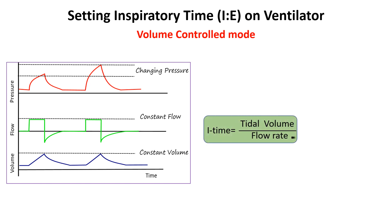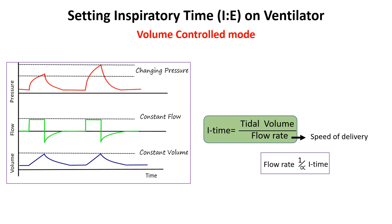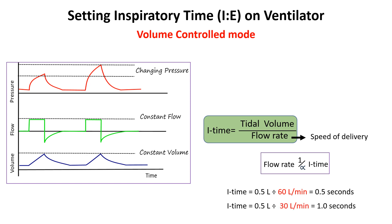Flow rate is the speed at which the ventilator delivers air into the lungs. When the flow rate is increased, the ventilator delivers the tidal volume more quickly, meaning the inspiratory phase is shorter. In contrast, when the flow rate is decreased, the ventilator delivers the same tidal volume more slowly, increasing the inspiratory time. For example, for a tidal volume of 0.5 liters at a flow rate of 60 liters per minute, the inspiratory time is 0.5 seconds, while at 30 liters per minute, it increases to 1 second.